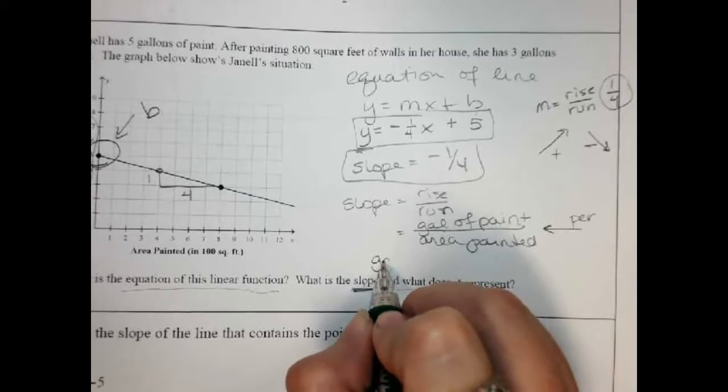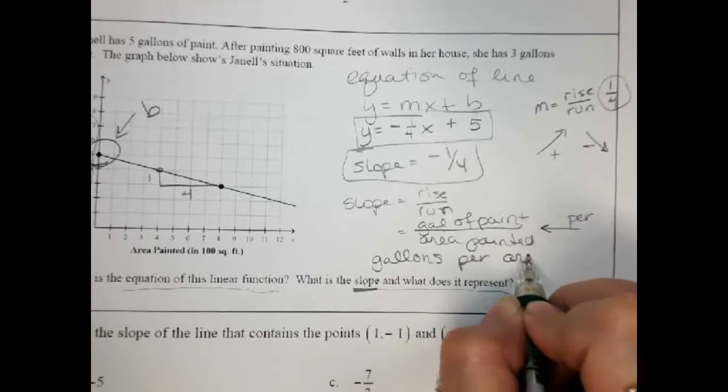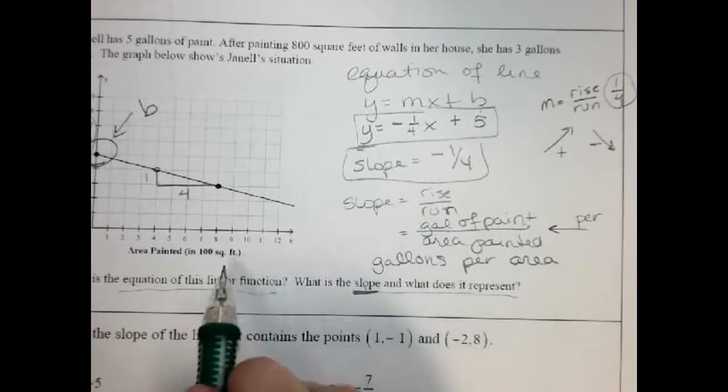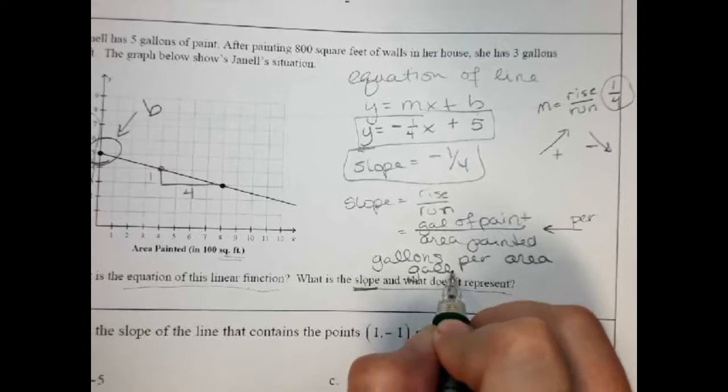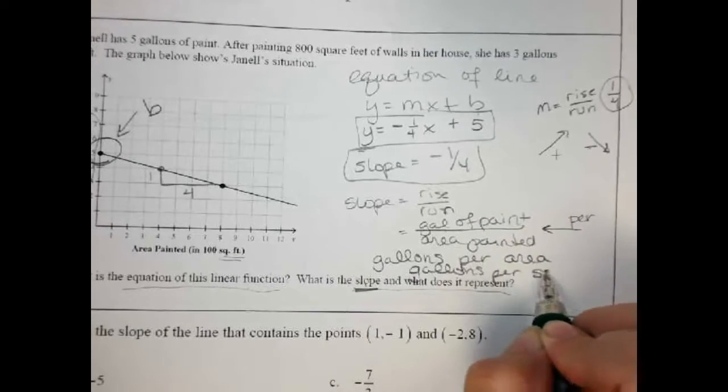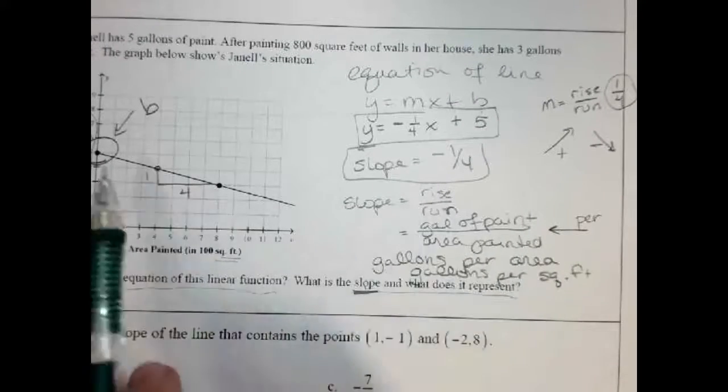So the gallons per area. Or we could use the square feet here for the area and we could say gallons per square feet, which was this part right here. So again, I'm just looking at rise over run for this part.